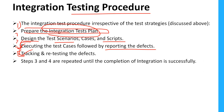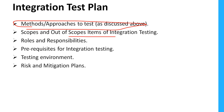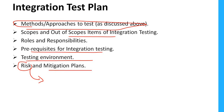The integration test plan includes: methods and approach (top-down or bottom-up), scope and out-of-scope items, roles and responsibilities, prerequisites for integration testing, testing environment, and risk and mitigation plans — describing what alternatives exist if any risk arises.